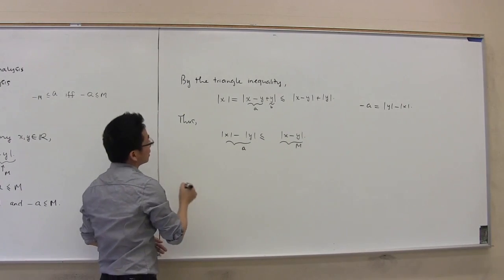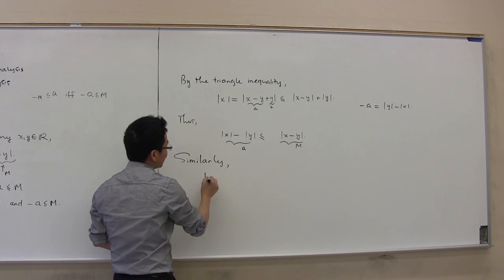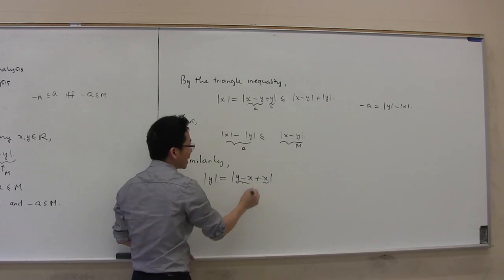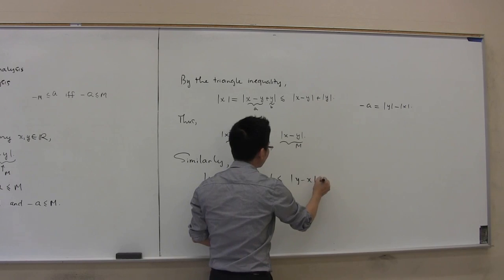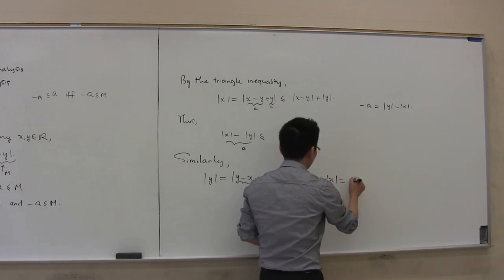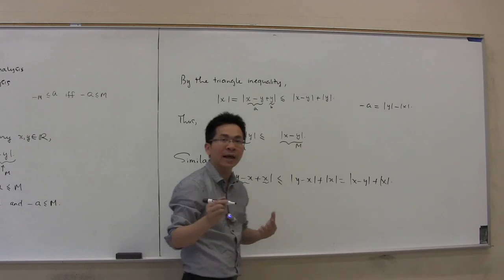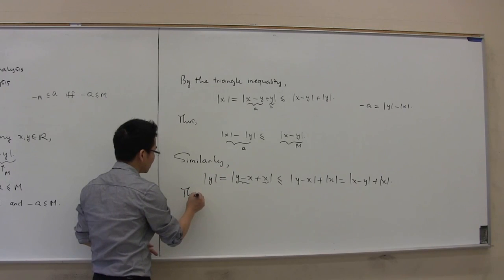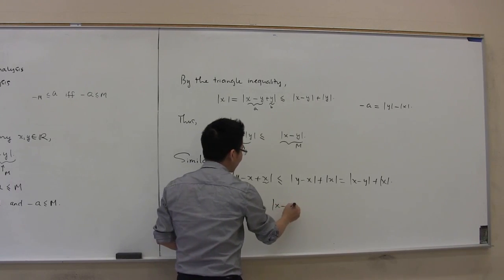Again, by the triangle inequality, |y| = |(y - x) + x| ≤ |y - x| + |x|. Note that |y - x| = |x - y|, so this is |x - y| + |x|. Subtracting |x| from both sides, we get |y| - |x| ≤ |x - y|.